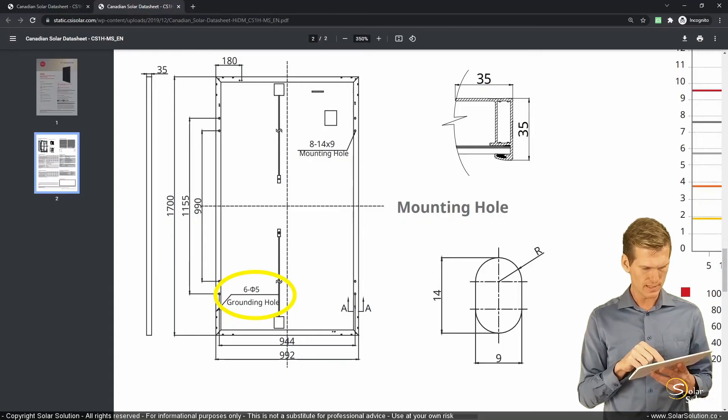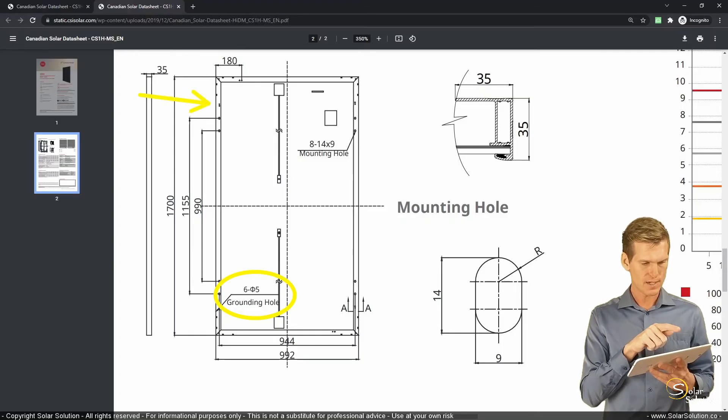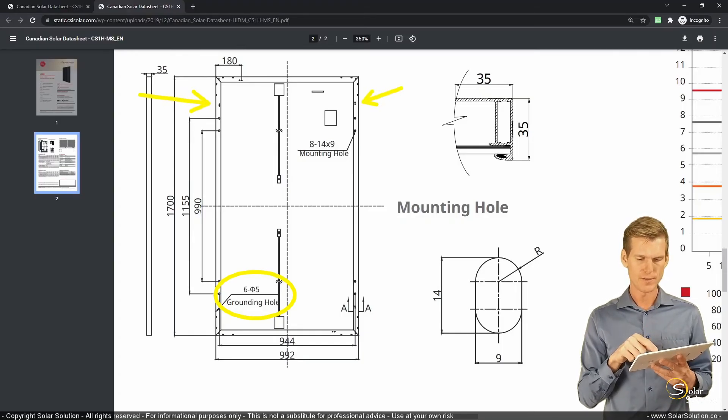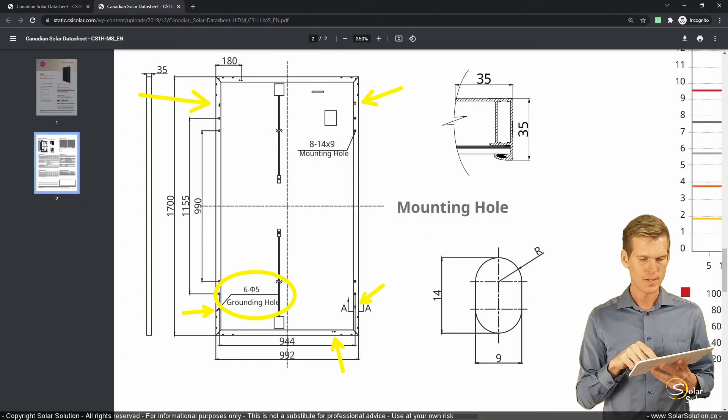It doesn't say it particularly, but I think for this panel there are two grounding holes on the left side, on the left long side, two on the right long side, and then one on the smaller horizontal, and one on the smaller horizontal bottom one. So that's how you can see where the grounding holes will be and what kind of sizes you can expect.